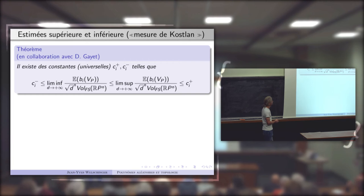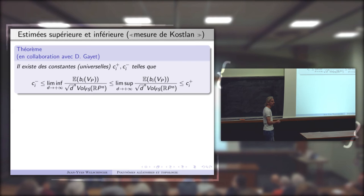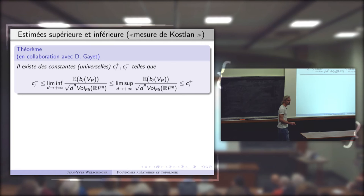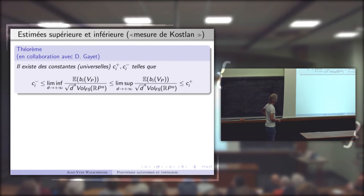Quand je divise par √d^n, je suis encadré par des constantes. J'ai mis au dénominateur aussi le volume de l'espace projectif pour la métrique de Fubini-Study. Ces constantes c_i^± sont universelles — elles dépendent de la dimension n et du numéro de Betti considéré — et elles sont les mêmes dans un cadre géométrique bien plus général.